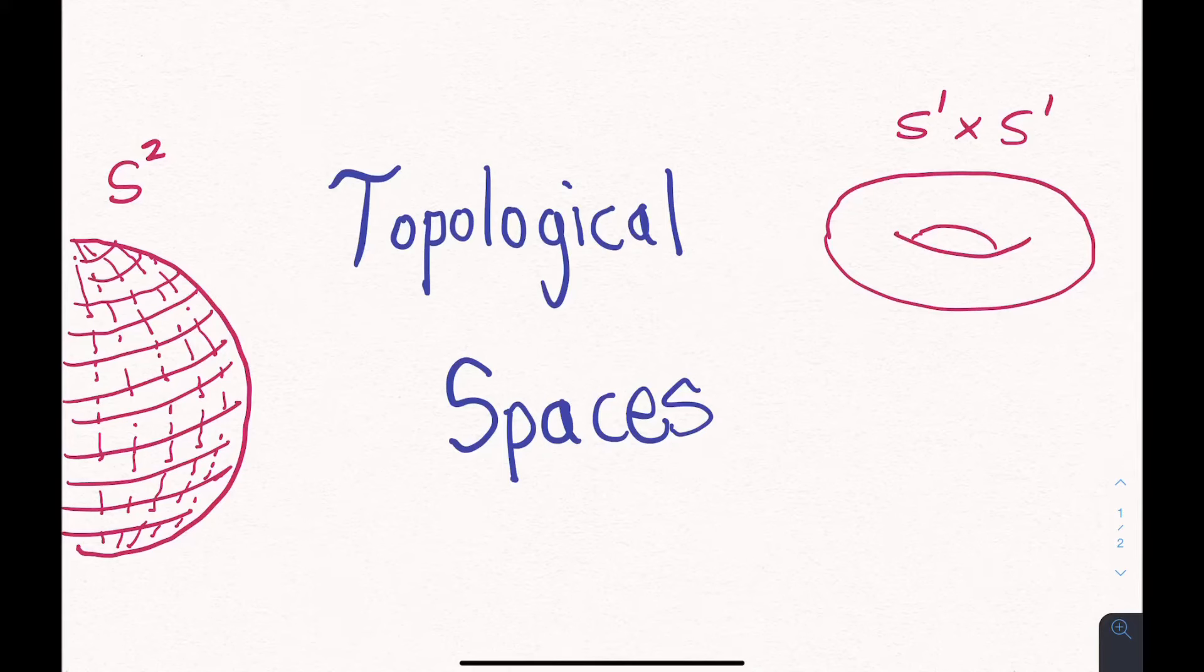What is a topological space? In mathematics, a space is one of the basic objects that mathematicians work with. And there's this entire zoo of spaces out there, which each have their own purpose.